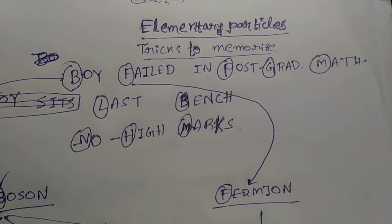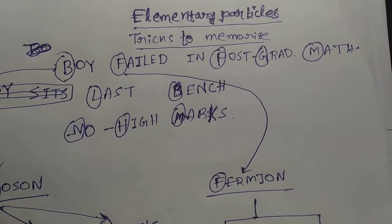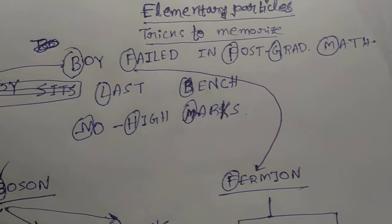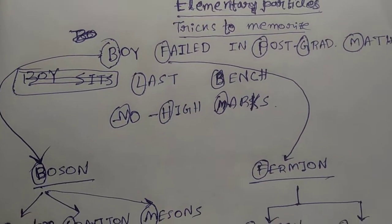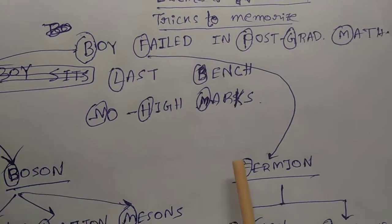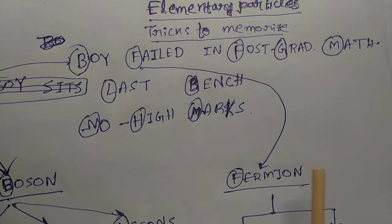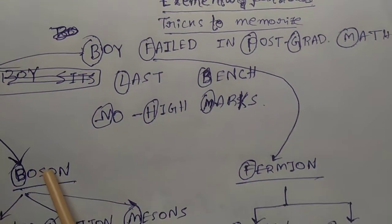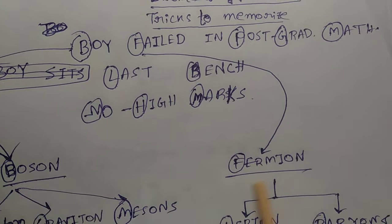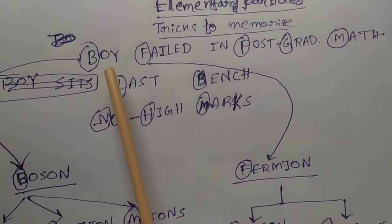Hello friends, today we are going to discuss how to memorize elementary particle table list. We know that there are two types of particles: one is boson, another is fermion. And how to memorize this? Students, the name of the two types of particles you have to memorize.